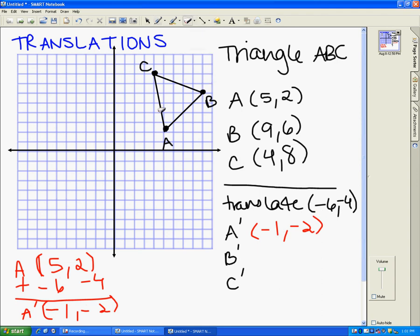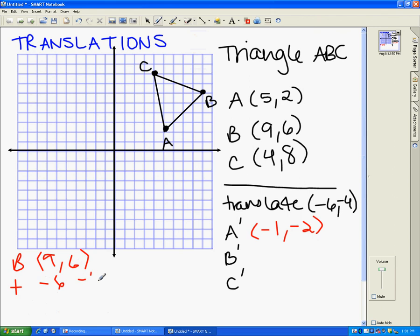So b coordinate is 9, 6. And again, we're going to add our translation, which is negative 6 and negative 4. So that b prime, 9 plus negative 6 is 3, 6 plus negative 4 is 2. So that means that b prime is at 3, 2.